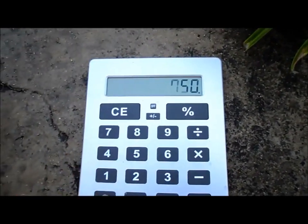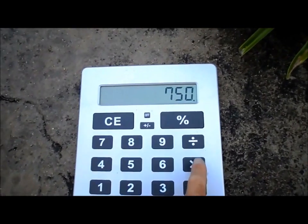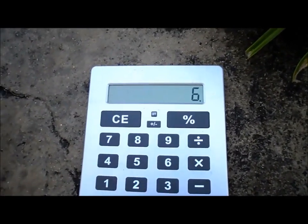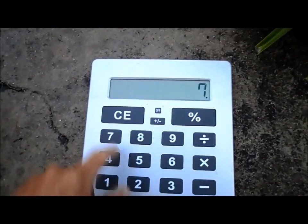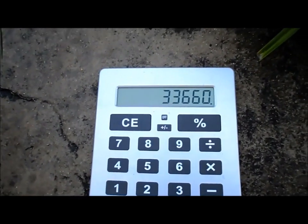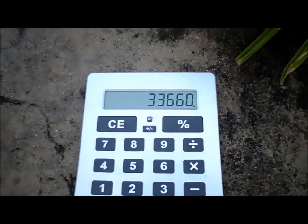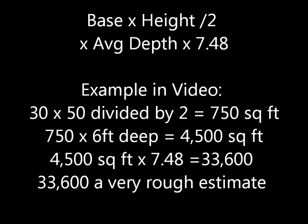So I'll take 750 times 6—that's 4,500 square feet—times the amount of water per square foot. And this pool has about 33,600, so about 34,000 gallons in this pool.